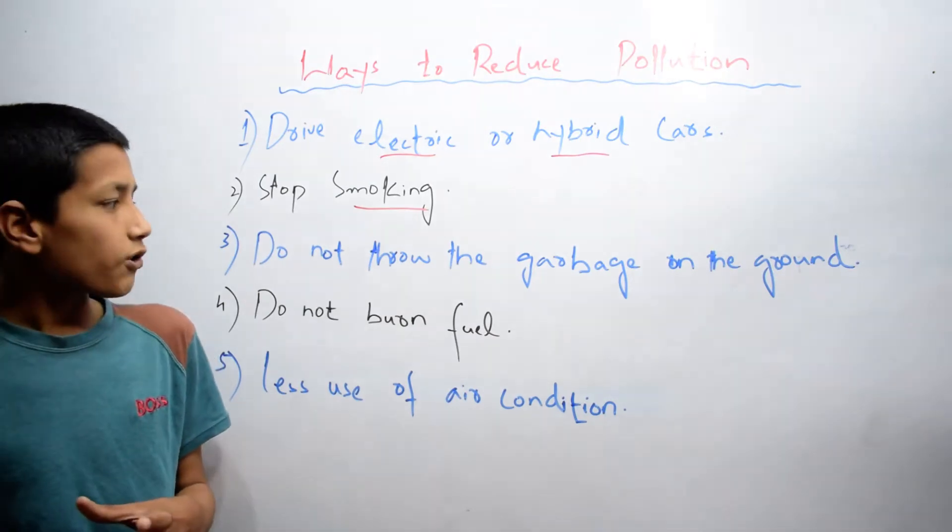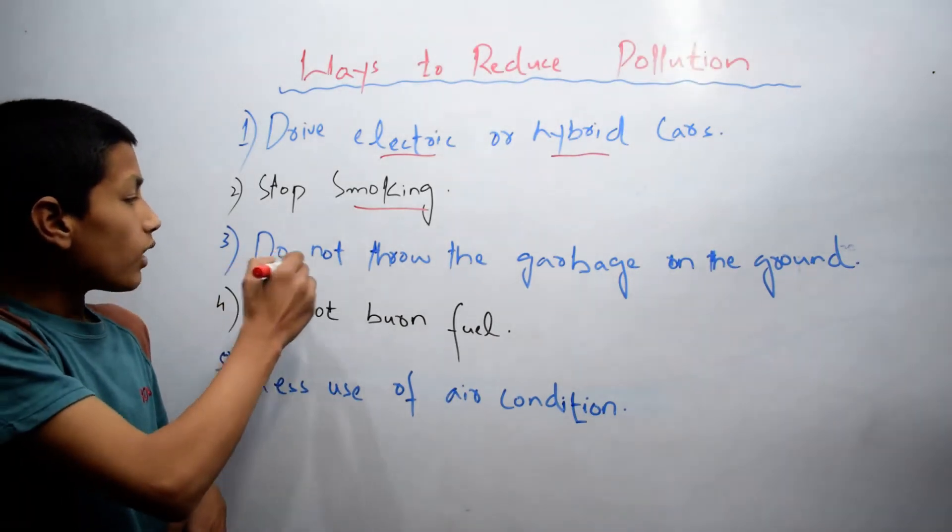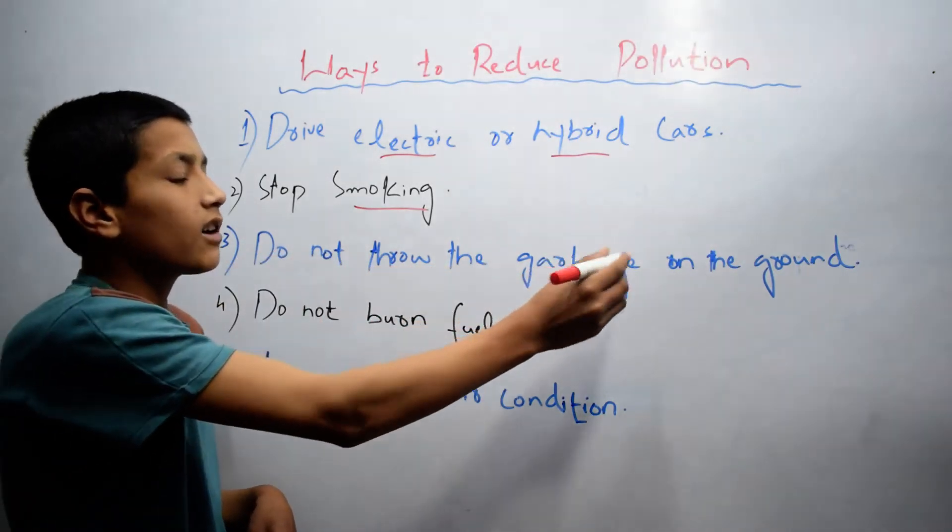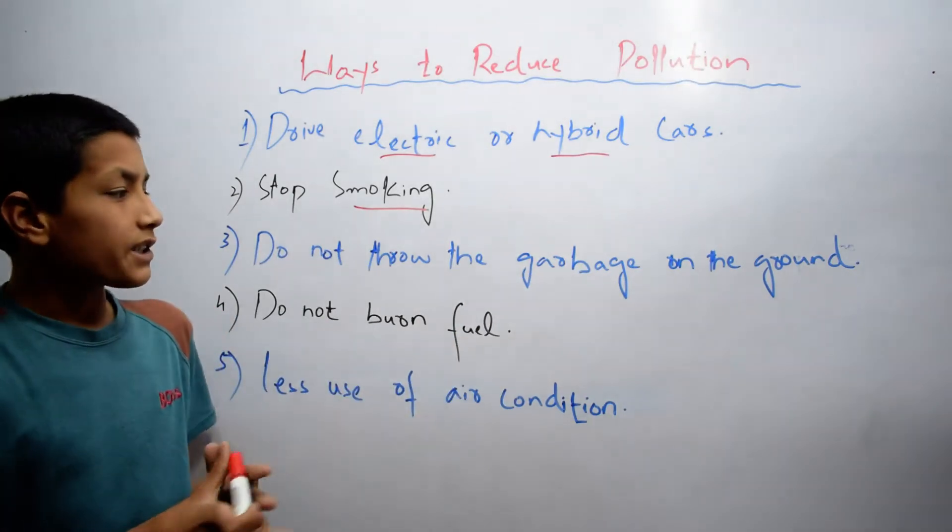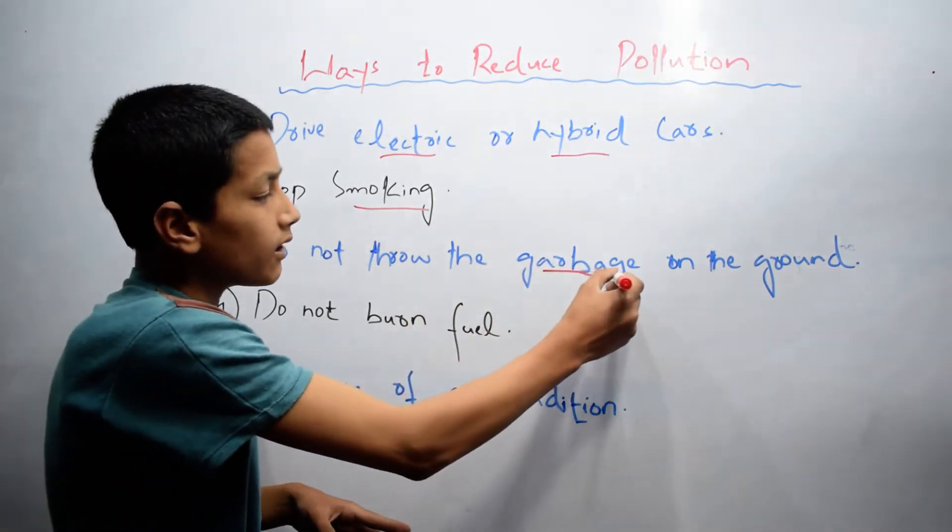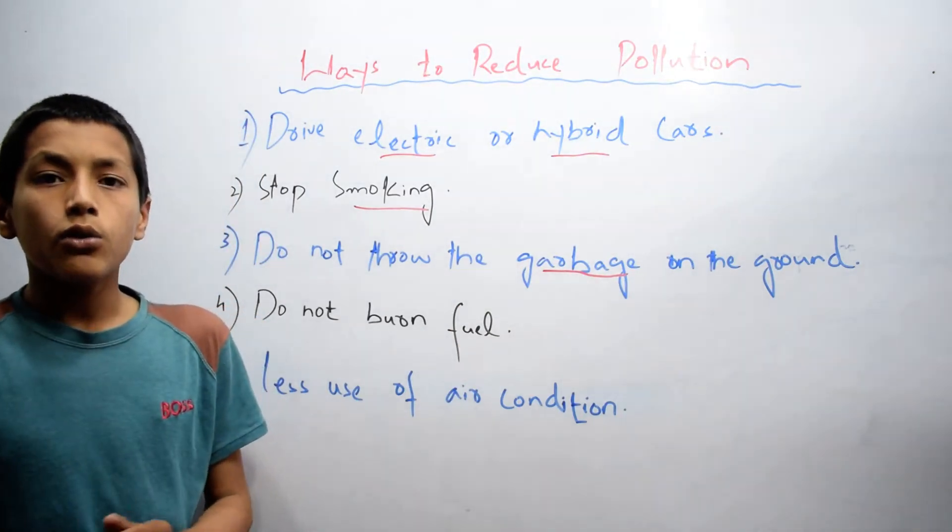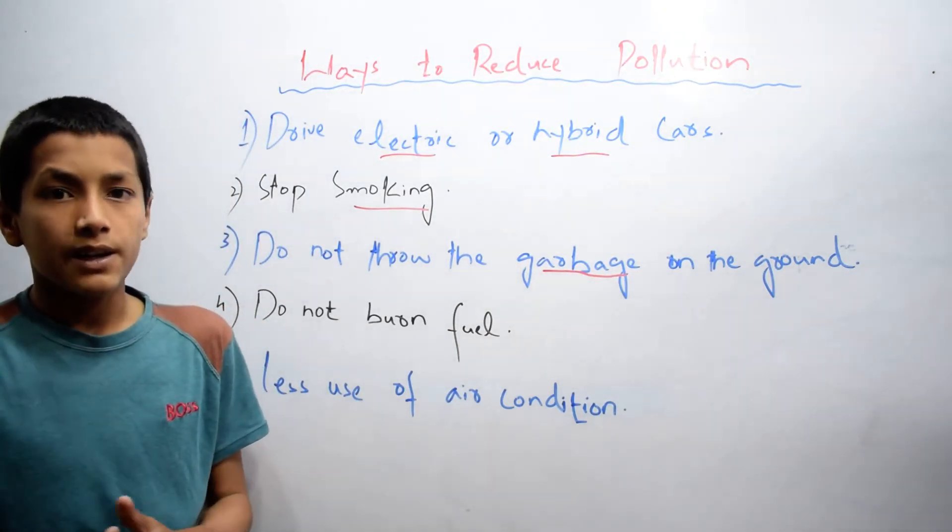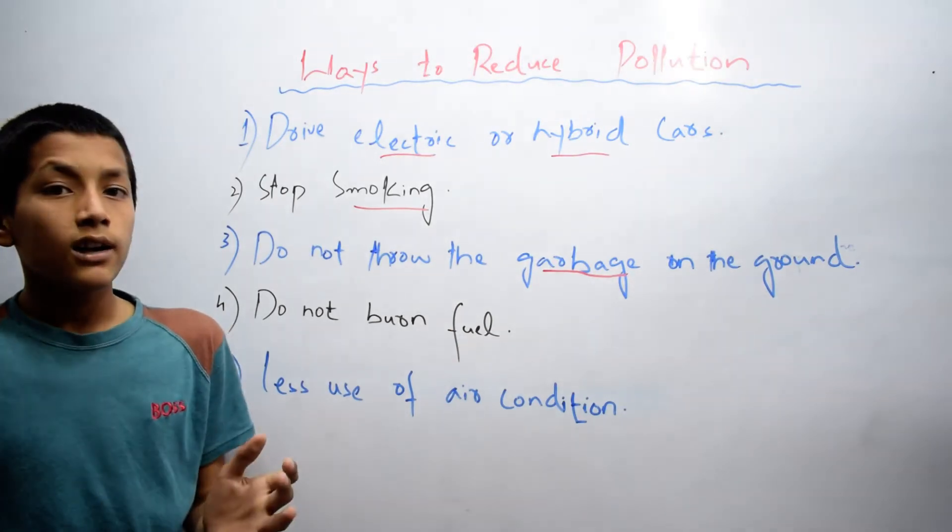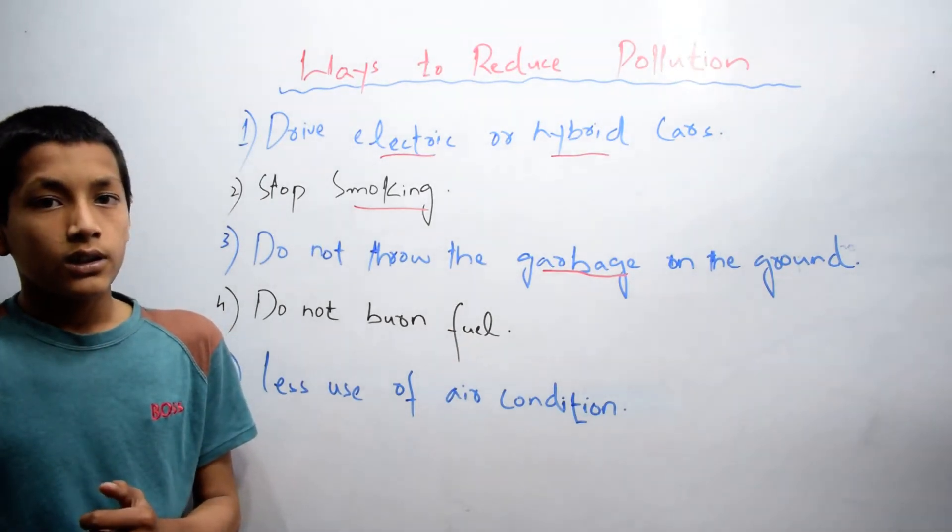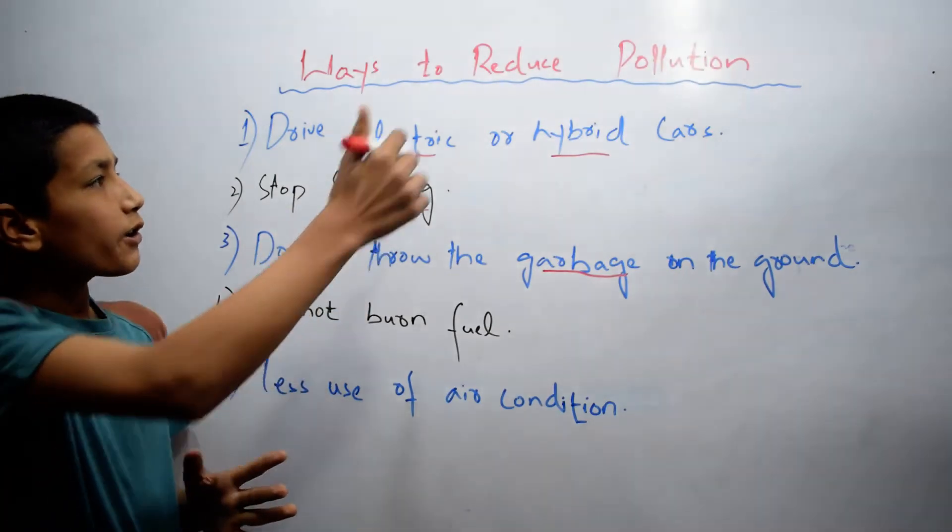The third way to reduce pollution is do not throw garbage on the ground. If you throw garbage, meaning waste material, they cause pollution. You need to drop garbage in the dustbin so they do not cause pollution. This is another way to reduce pollution.